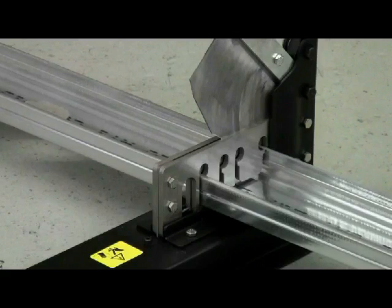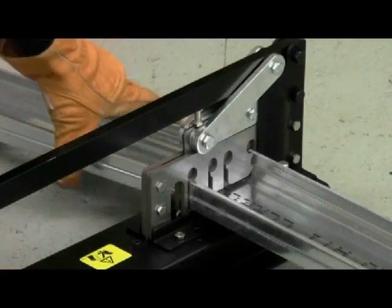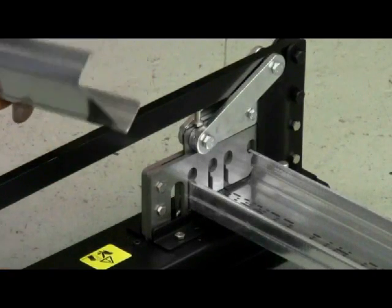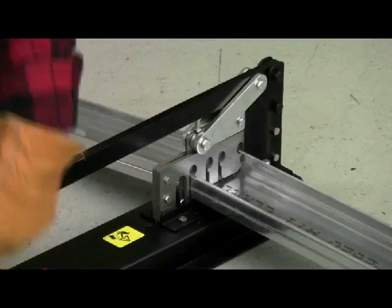A guillotine style shear cuts completely through the metal stud or runner in one easy stroke without deforming the channel shape.